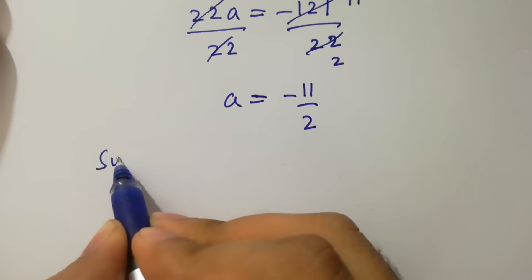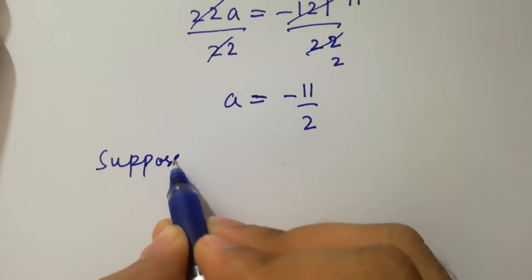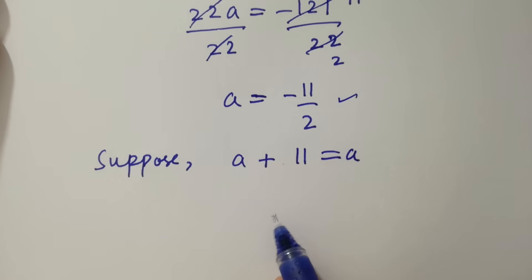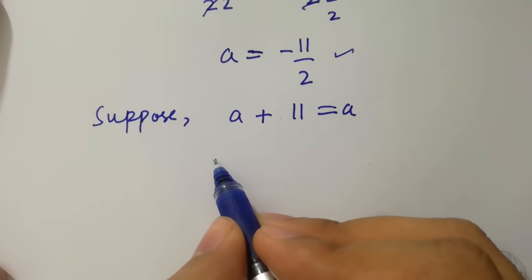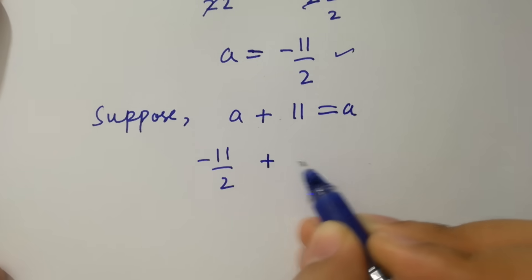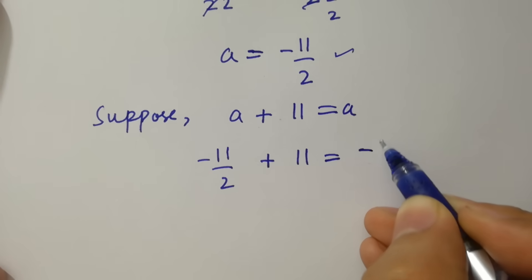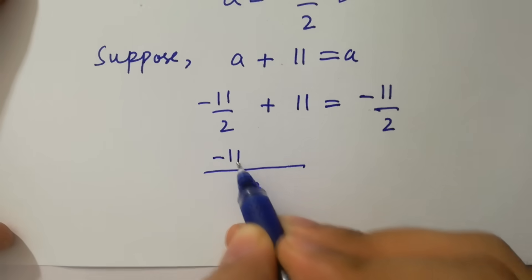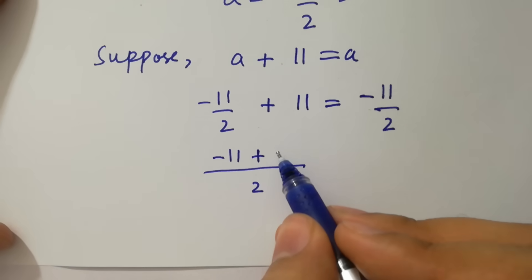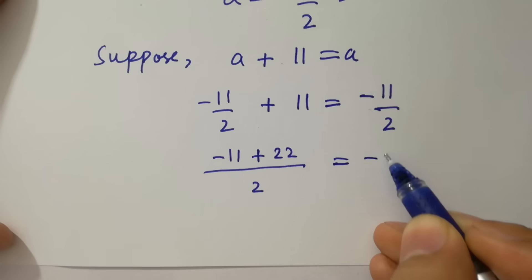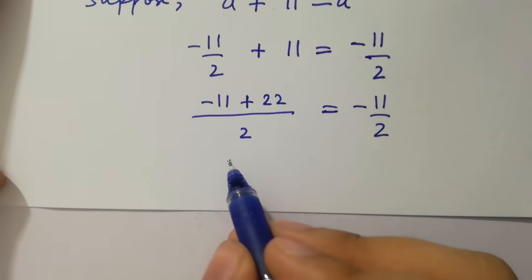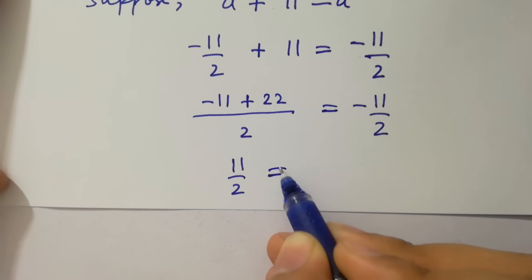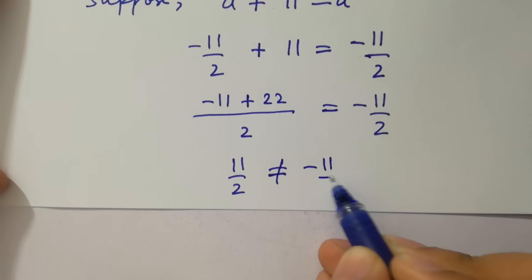Suppose we verify: a plus 11 equal to a. Put the value a equal to minus 11 over 2 plus 11. Taking LCM, we have minus 11 plus 22 over 2, which gives 11 over 2. But this does not equal to minus 11 over 2. Why?